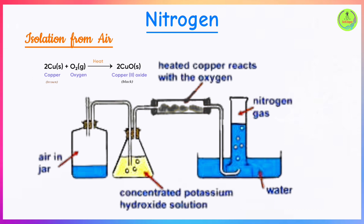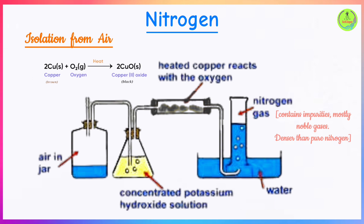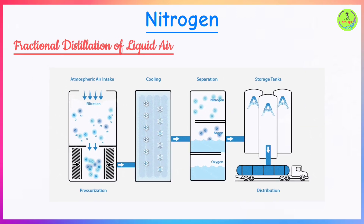The nitrogen gas collected this way will not be totally pure — it will contain impurities mostly in the form of noble gases such as argon and helium, which cannot be removed using chemical reactions because they are chemically unreactive. As a result, this nitrogen will be denser than the pure nitrogen obtained from decomposition of ammonium nitrite.